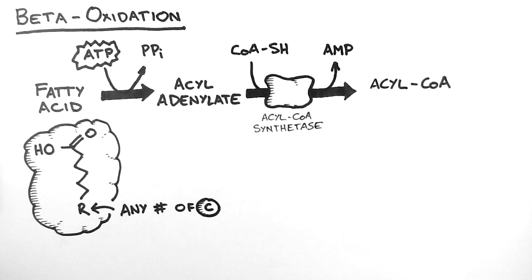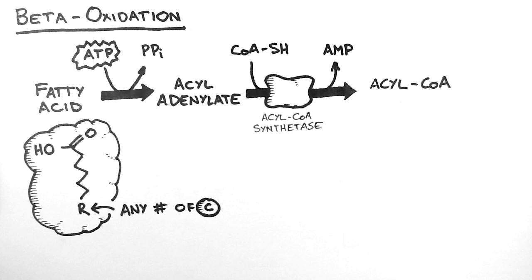The enzyme that orchestrates all this is acyl-CoA synthetase. It's important not to confuse acyl-CoA with acetyl-CoA. An acyl-CoA is pretty much just any fatty acid with a coenzyme A molecule attached. However, acetyl-CoA is the substrate for the TCA cycle. The whole purpose of beta-oxidation is to turn this acyl-CoA into many acetyl-CoAs. Now if the acyl-CoA has 12 carbons or less, then it can just diffuse through the inner mitochondrial membrane and undergo beta-oxidation. However, most fatty acids in our diet have more than 14 carbons, so they get taken through the inner mitochondrial membrane using the carnitine shuttle.